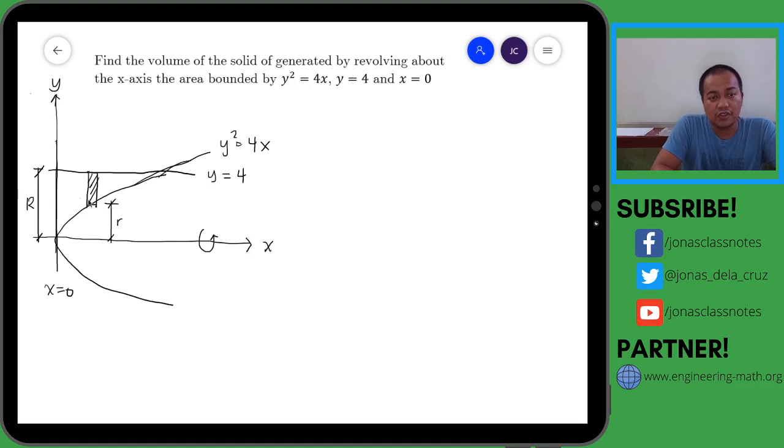Okay, so the volume therefore of the differential volume is equal to pi multiplied by the outer radius squared minus the inner radius squared, and then multiplied by the thickness of the washer, which in this case is dx.